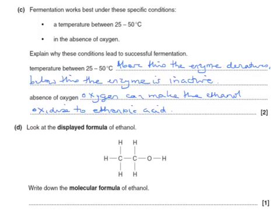And look at the displayed formula of ethanol. Write down the molecular formula of ethanol. Well, here we'd write down the number of each type of atom. So there would be two carbons. The hydrogens, there's actually six. So we could write H6O, or normally we write C2H5 and then OH afterwards.